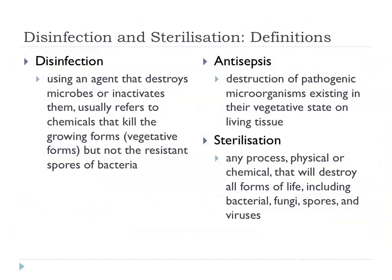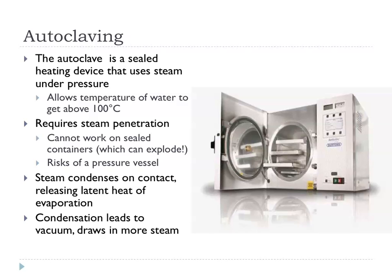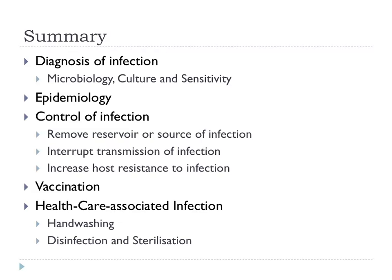Disinfection is where we destroy microbes, killing all the vegetative forms of growing organisms but not spores. Antisepsis is where we do something similar on living tissue. Sterilisation is where we actually kill everything — all the spores and even the most resistant forms. The autoclave works effectively like a massive pressure cooker, relying on steam penetration and temperature to achieve sterilisation. So to summarise, we've taken you through how we diagnose infection, basic epidemiology terms, control of infection, vaccination, and healthcare-associated infection.